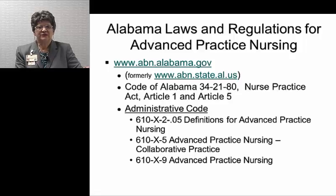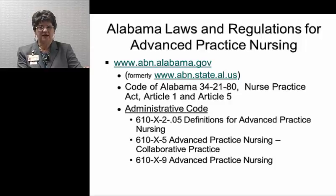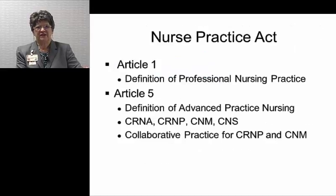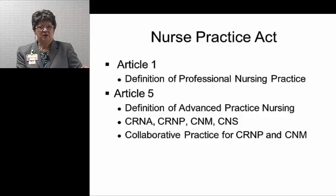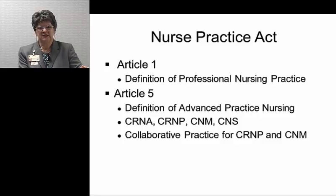The laws and regulations for advanced practice nursing are posted on our website under the heading for laws. We're going to be talking about the administrative code in addition to the Nurse Practice Act. Article 1 of the Practice Act gives the definition of professional nursing practice, so that definition for registered nurse practice is always our starting point when we talk about advanced practice nursing. Article 5 includes definitions of advanced practice nursing and specific definitions for certified registered nurse anesthetist, certified registered nurse practitioner, certified nurse midwife, and clinical nurse specialist. It also includes regulations for the collaborative practice of physicians with CRNPs and CNMs, which is jointly regulated with the Alabama Board of Medical Examiners.